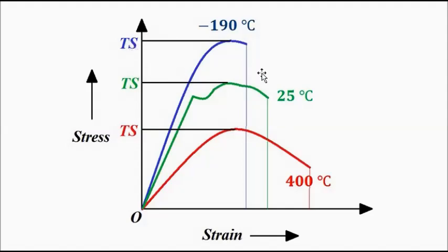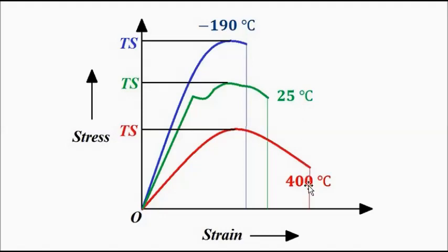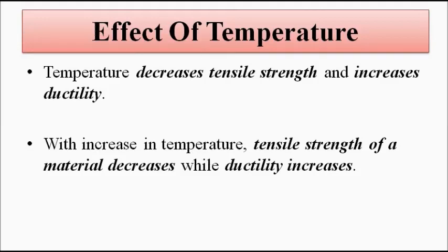As temperature increases to 25°C, the peak point of the green stress-strain curve is lower, giving a reduced tensile strength. For the red curve at 400°C, the peak point is lower still — this is the minimum tensile strength. This confirms that with increase in temperature, tensile strength decreases.